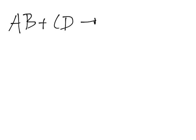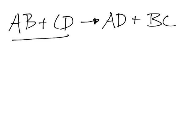Let's say you have a reaction that goes like this: AB plus CD forms AD plus BC. This side represents the reactants and this is the products. One of these two is going to be the limiting reactant, and the other one is going to be the excess reactant. Basically, what you want to do is determine the mass of one of the products.